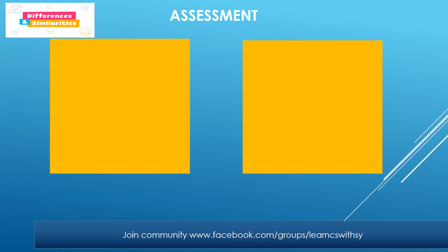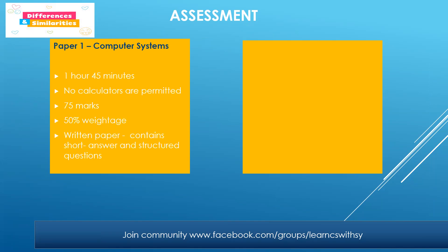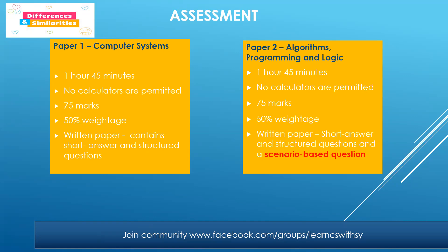Now let's talk about the differences and similarities in the assessment. For Paper 1, Computer Systems, the duration is 1 hour 45 minutes, calculators are not permitted, the paper is 75 marks, its weightage is 50%, and it's a written paper containing short answers and structured questions. For Paper 2, Algorithms, Programming and Logic, the duration is also 1 hour 45 minutes, calculators are not allowed, it is also 75 marks with 50% weightage, and it is also a written paper composed of short answers and structured questions, along with a scenario-based question.